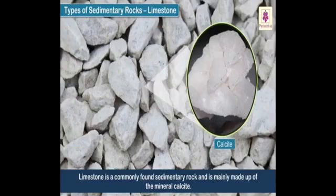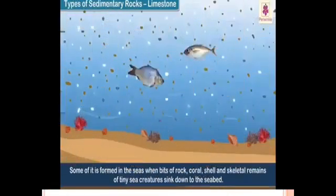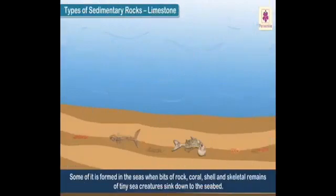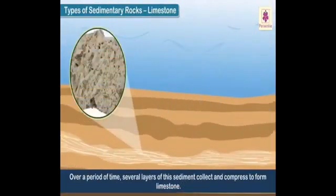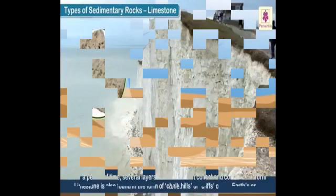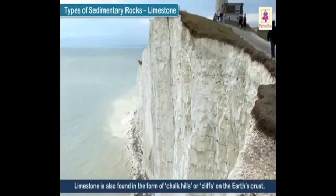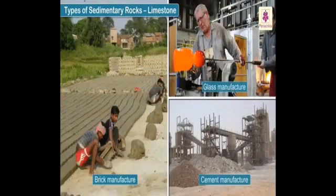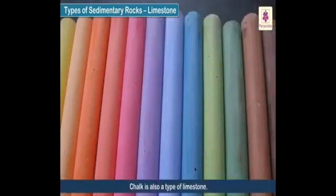Limestone is a commonly found sedimentary rock mainly made up of the mineral calcite. Some of it is formed in the seas when bits of rock, coral, shell, and skeletal remains of tiny sea creatures sink to the sea bed. Over time, several layers of this sediment collect and compress to form limestone. Limestone is also found in the form of chalk hills or cliffs. It is used in making bricks, glass, and cement. Chalk is also a type of limestone.